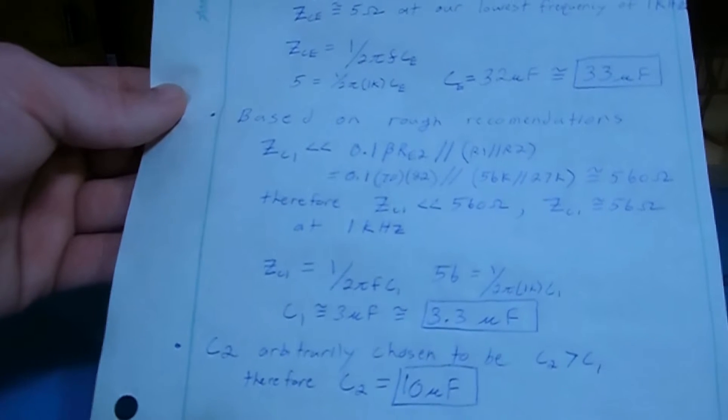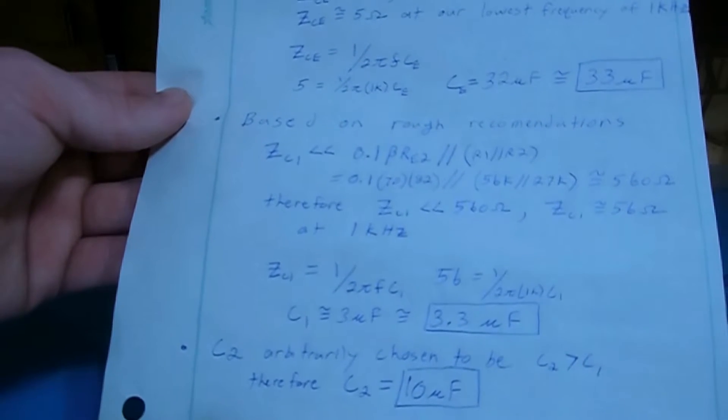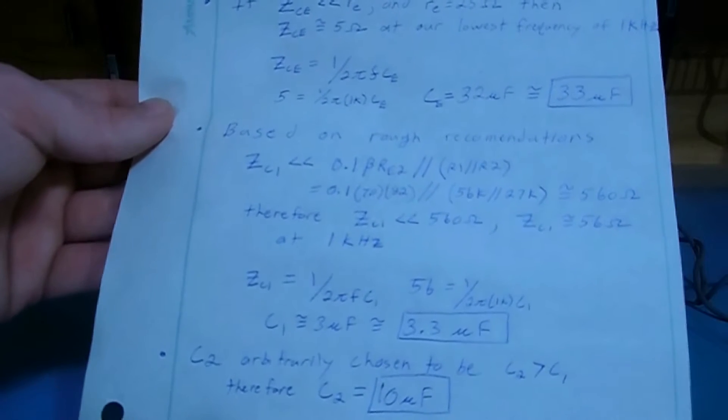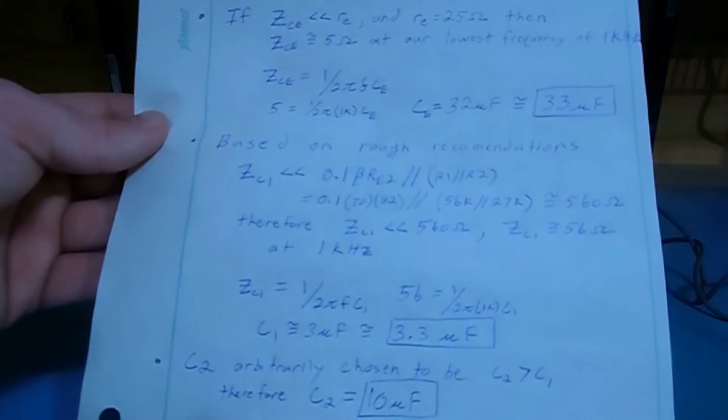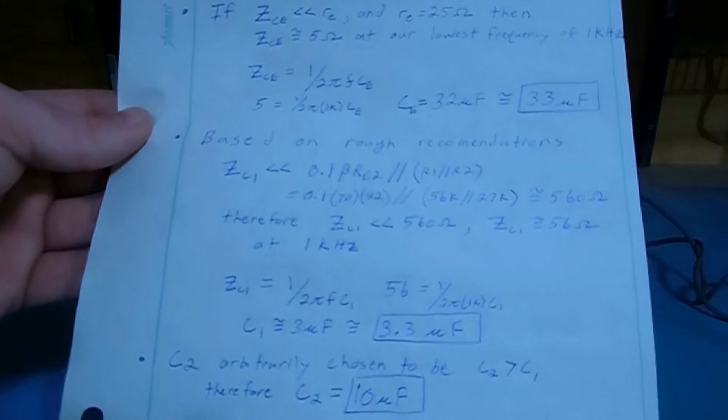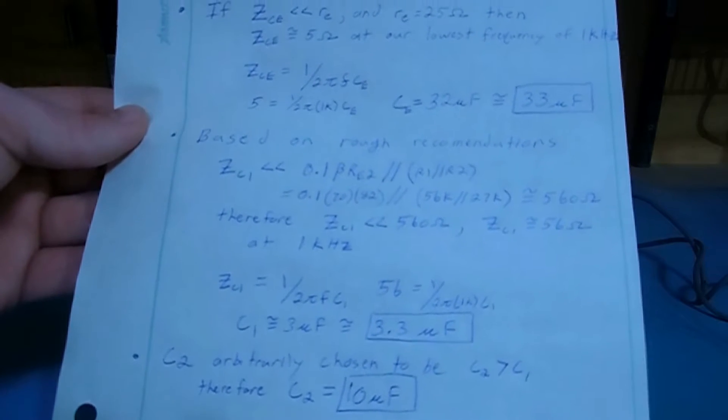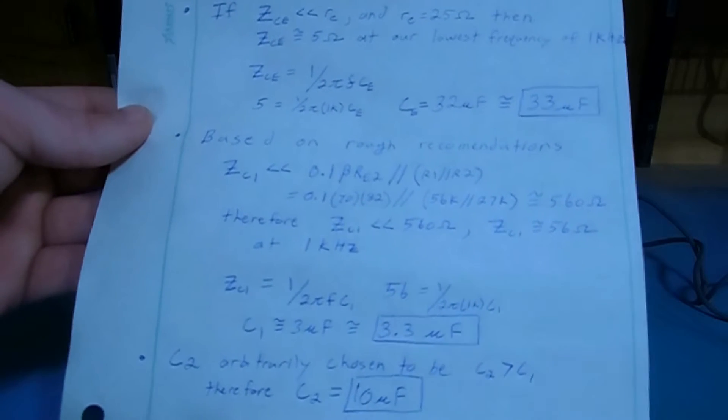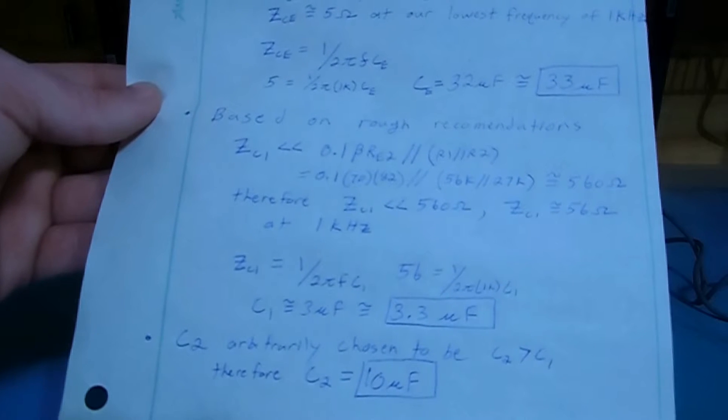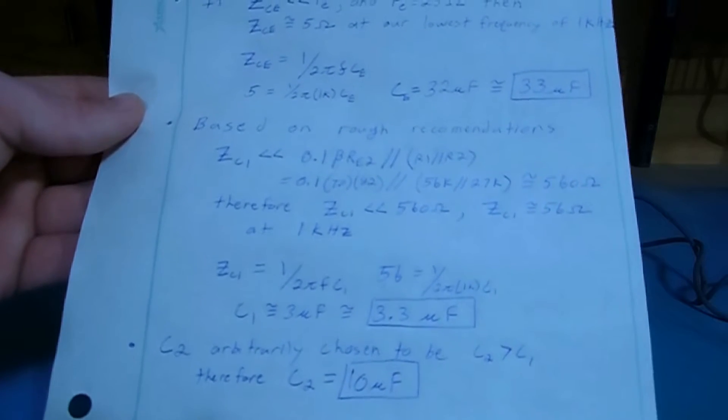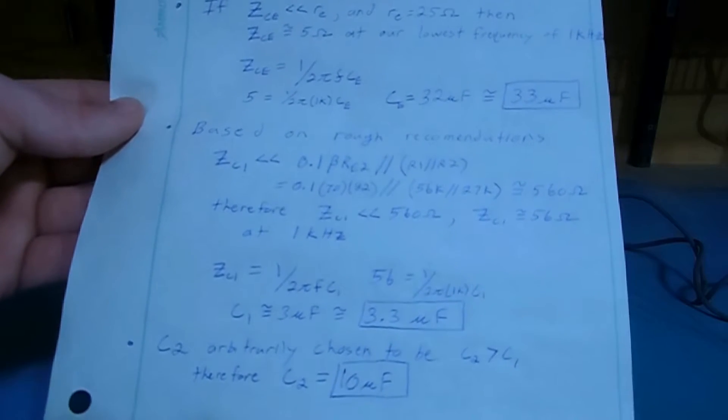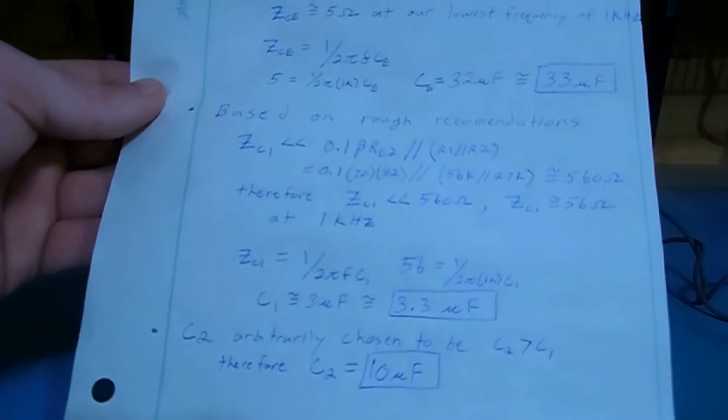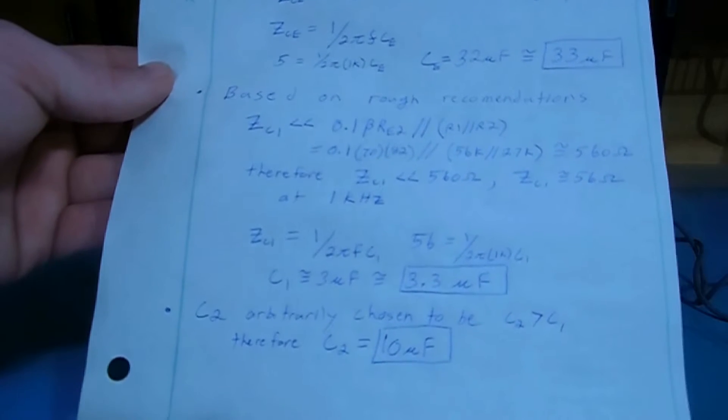We're going to say we want our impedance for the input capacitor C1 to be much less than this expression, which is 0.1 times beta times RE2 in parallel with the parallel combination of R1 and R2. Throwing all of those values into that equation, we get 560 ohms, so if we want our impedance to be much less than 560, we're just going to arbitrarily choose 56.